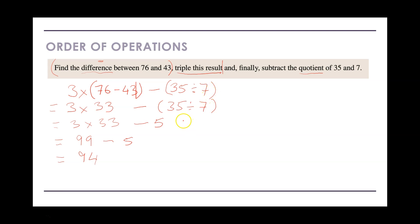There were only about five steps in the whole process, but possibly the most important was deciding what the original equation was — reading through the question carefully and working out what equation to write. Looking for keywords like 'difference', 'result', 'quotient', and 'subtract' helps us know how to put the equation together. That's a set of examples for you to look back over, and you can go through and do your classwork as well.